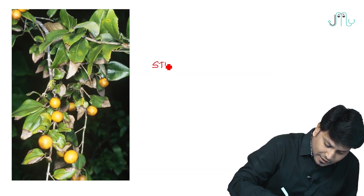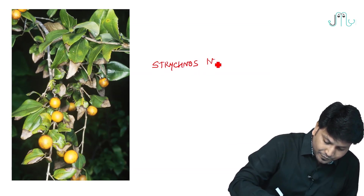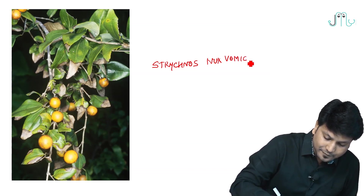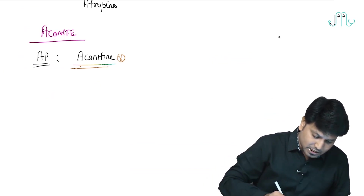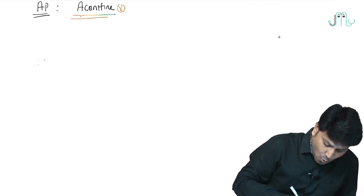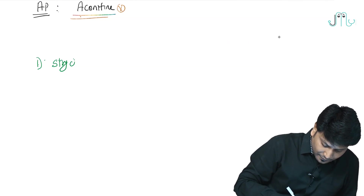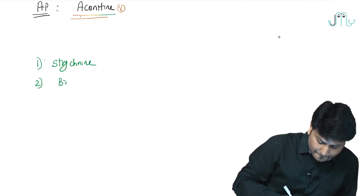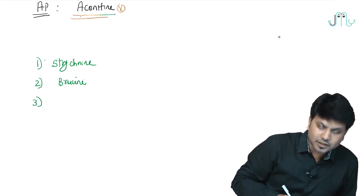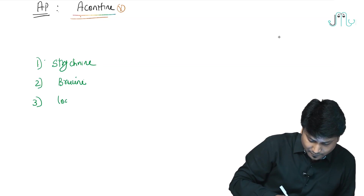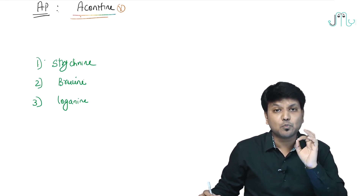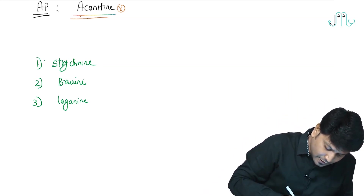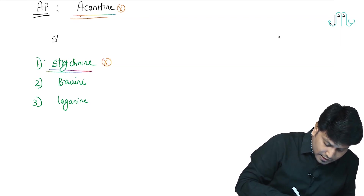This is a very unique poison — nothing but Strychnos nux-vomica, a spinal poison. The three important active principles are: strychnine, brucine, and loganin. If they ask which is the most important active principle, the answer is strychnine.